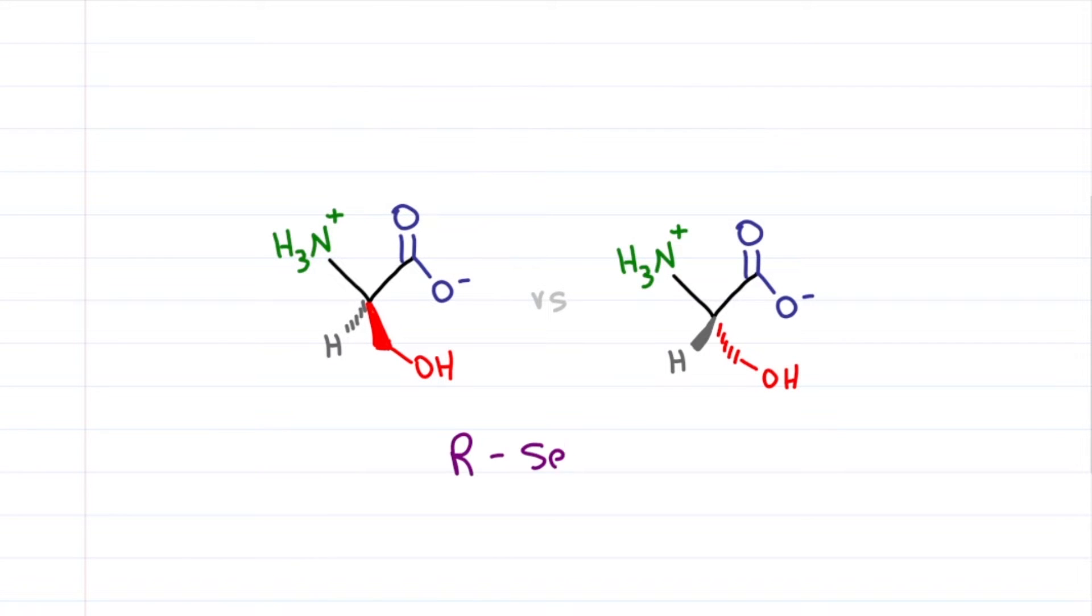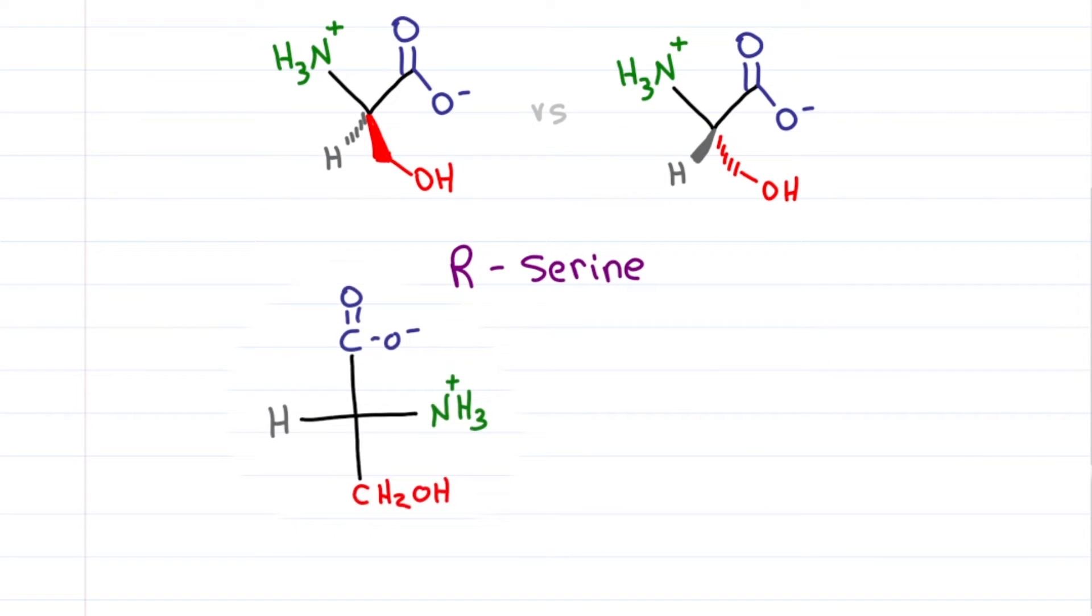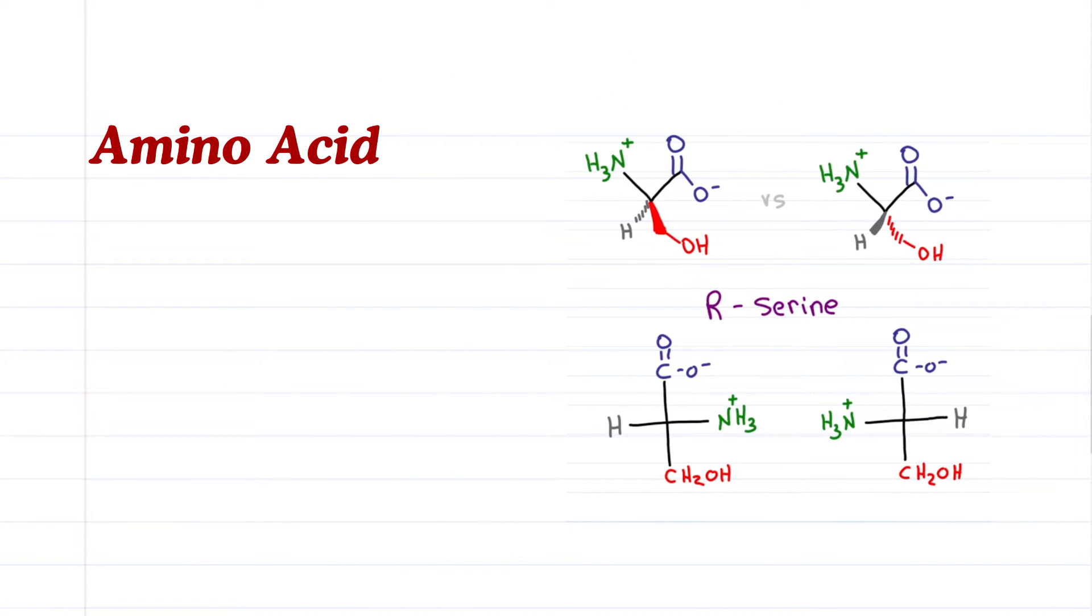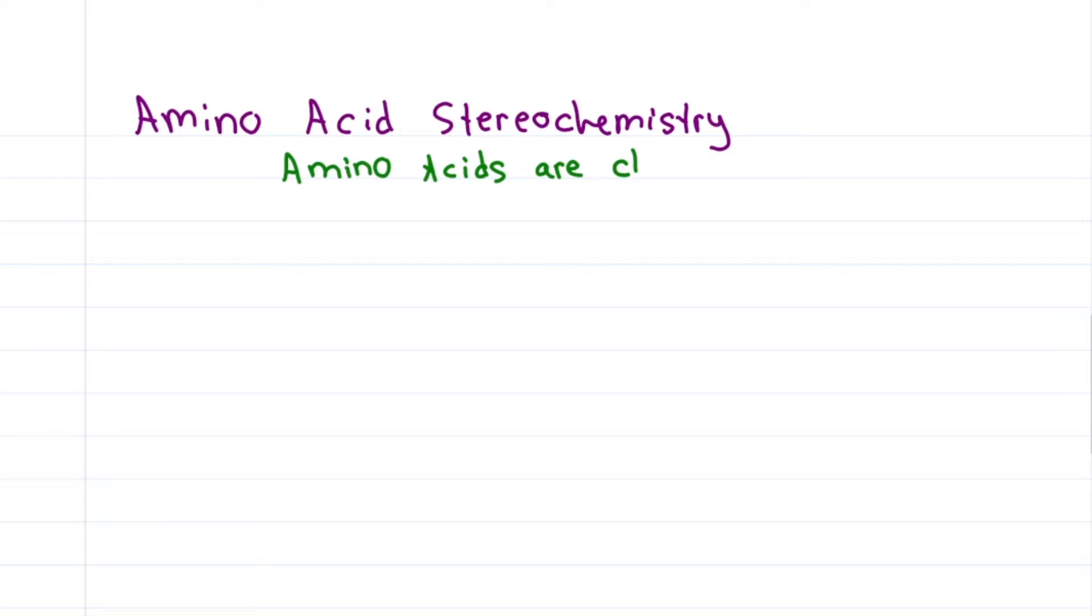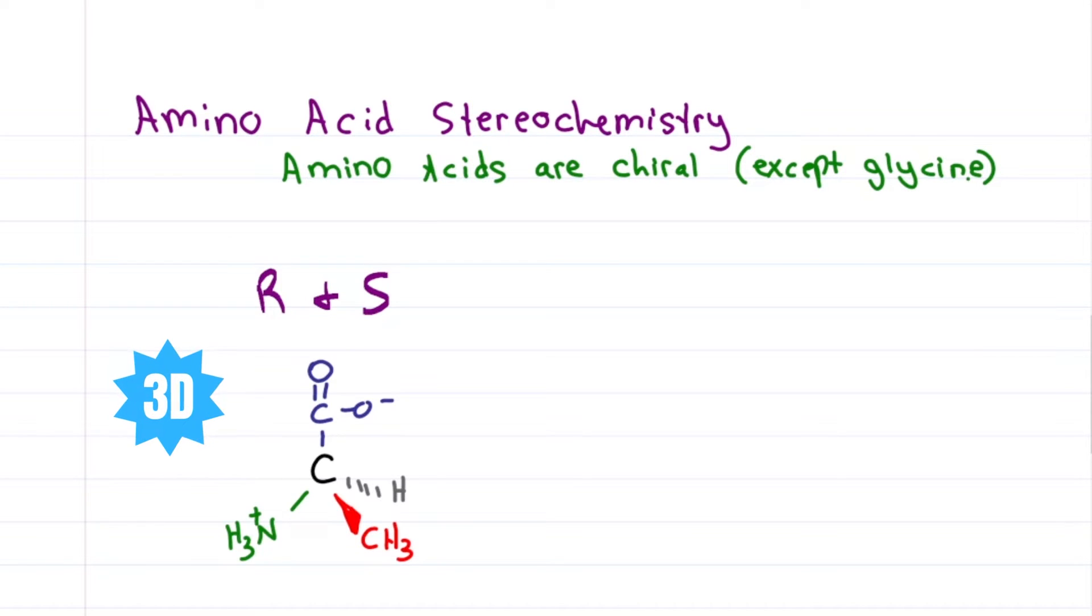Which of the following is R-serine and does it match the D or L Fischer projection? That's exactly what we're going to cover in this Leah for Psi MCAT video along with a fun time saving shortcut. Amino acids are chiral molecules except for glycine. You'll use R and S for three dimensions and D and L for flat Fischer projections. Let's start with a quick review of stereochemistry.